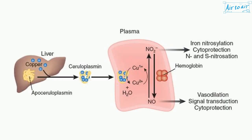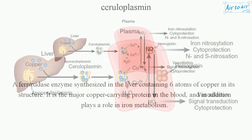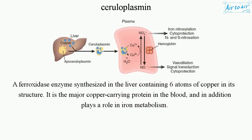Ceruloplasmin is a ferroxidase enzyme synthesized in the liver, containing six atoms of copper in its structure. It is the major copper-carrying protein in the blood, and in addition plays a role in iron metabolism.